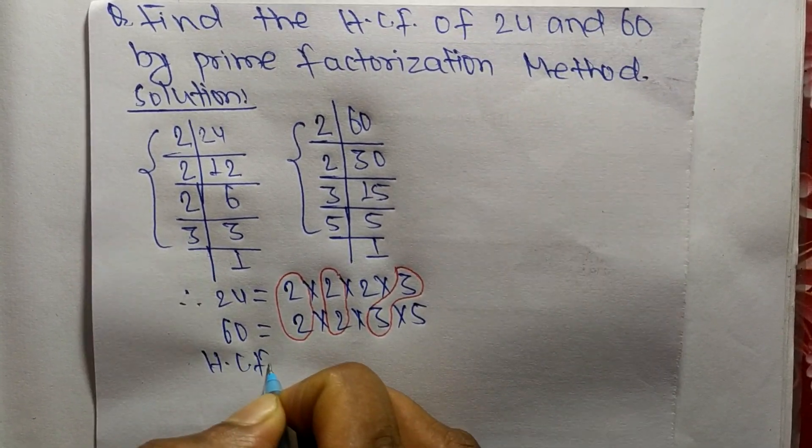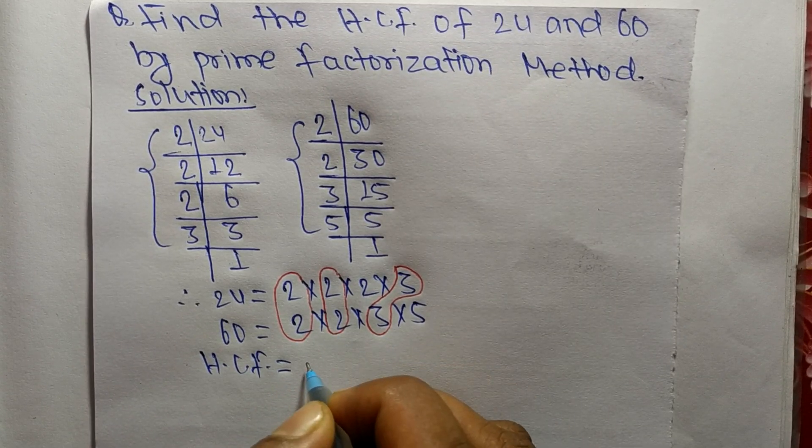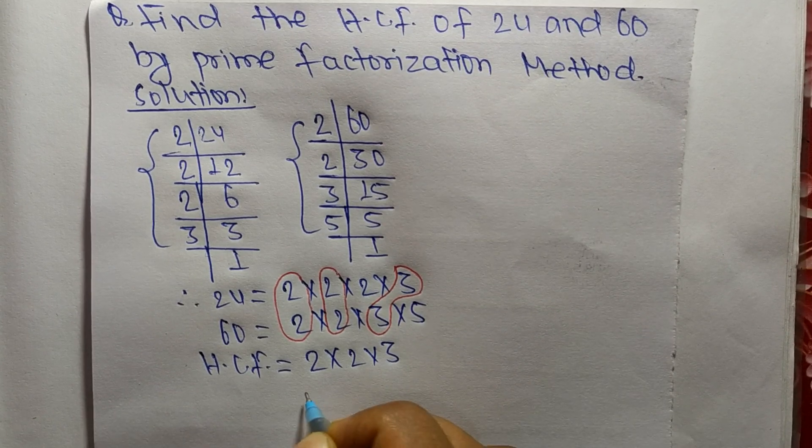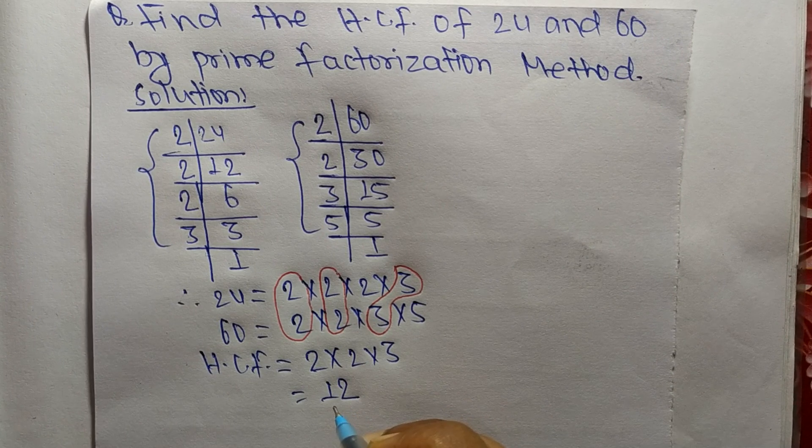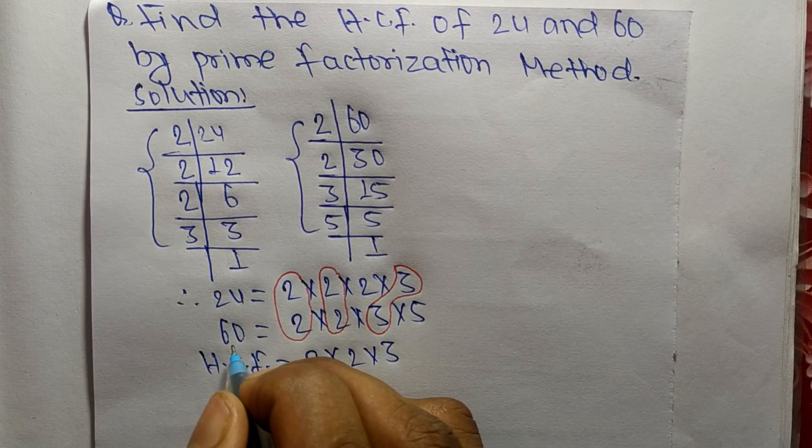The HCF is equal to the product of these common factors, that is 2 times 2 times 3. So 2 times 2 equals 4, and 4 times 3 equals 12. Therefore, 12 is the HCF of 24 and 60.